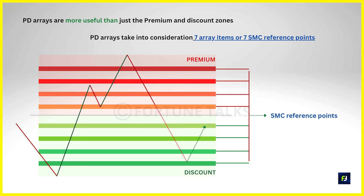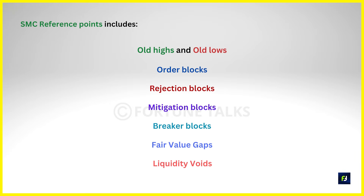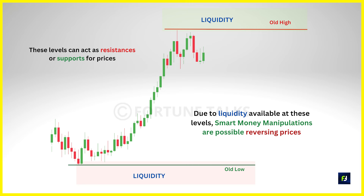PD arrays also take into consideration some array items or reference points. Specifically, there are 7 array items or institutional reference points that we need to consider in a PD array. In ICT methodology, these reference points include old highs and old lows, order blocks, rejection blocks, mitigation blocks, breaker blocks, fair value gaps, and liquidity voids. Old highs and old lows refer to the swing highs and swing lows that can act as potential resistance or support levels for prices respectively. Due to this reason, there will be liquidity in the form of retail orders available beneath these levels. Old highs and old lows are potential areas where smart money can manipulate prices to absorb the liquidity and then reverse the market direction.